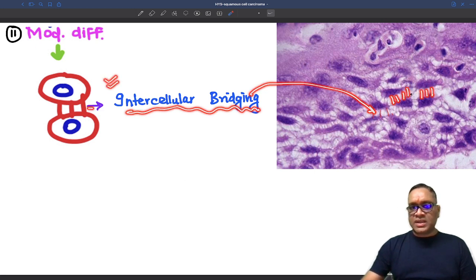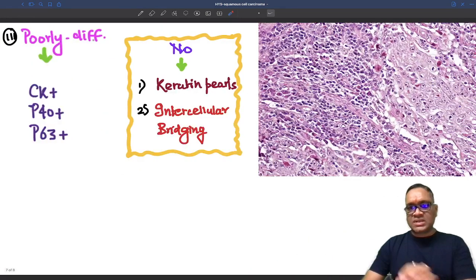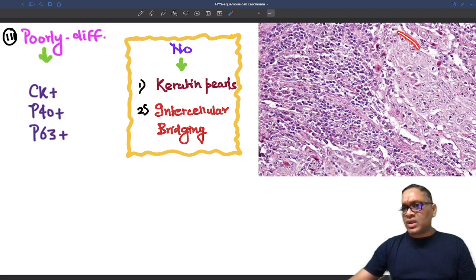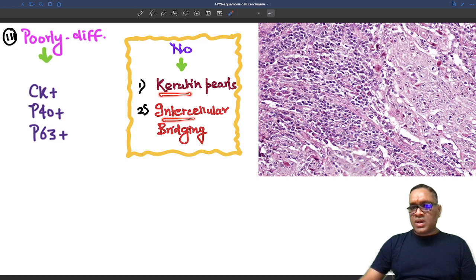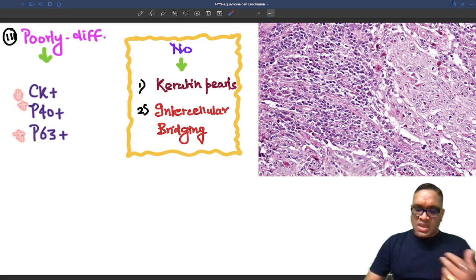So whenever you find intercellular bridging, it is moderately differentiated Squamous Cell Carcinoma. And poorly differentiated Squamous Cell Carcinoma, as you can see, there is nothing visible and you can notice there are cohesive tumor cells which are growing and they are not well differentiated. So neither you are seeing any keratin pearls nor intercellular bridging. No keratin pearls, no intercellular bridging. When you are seeing that, it means it is poorly differentiated. How we will diagnose? IHC markers: cytokeratin positive, P40 positive, and P63 positive. Enjoy learning.